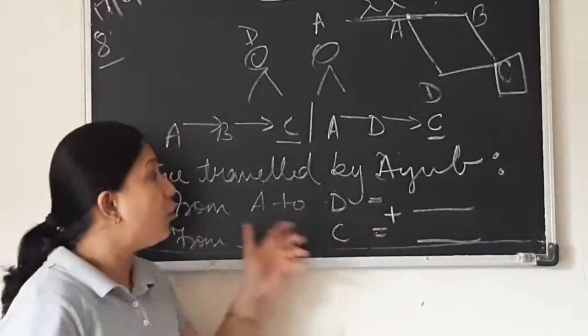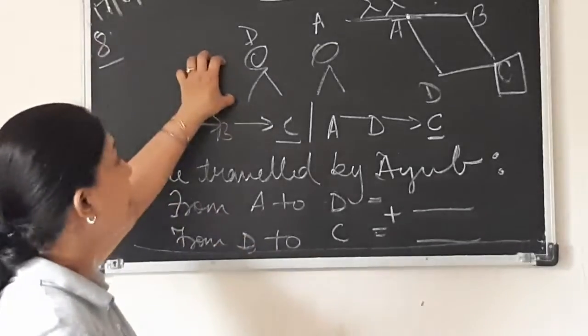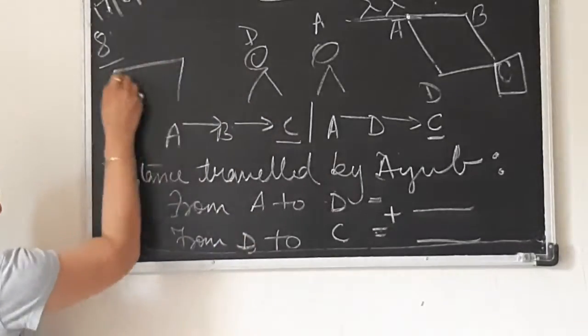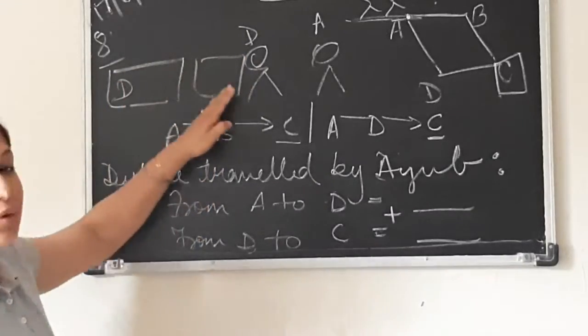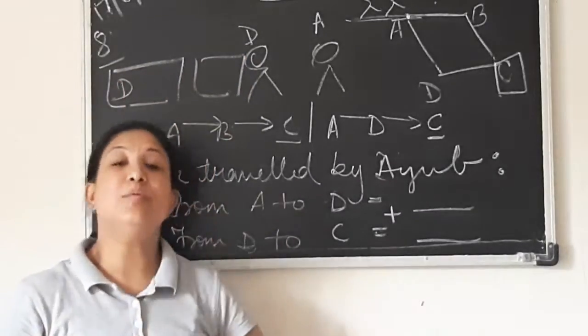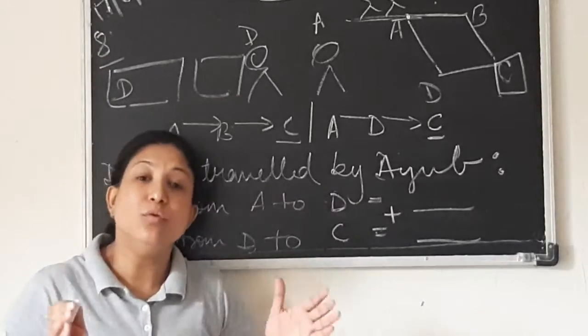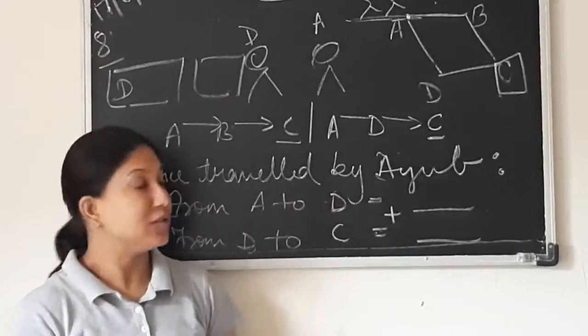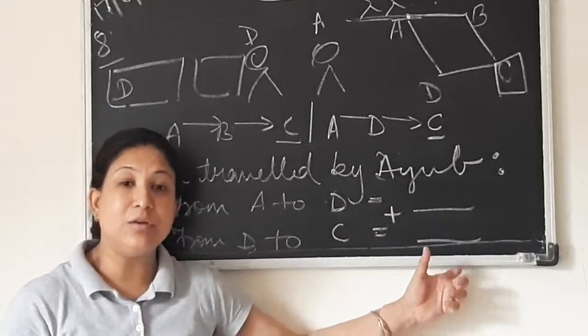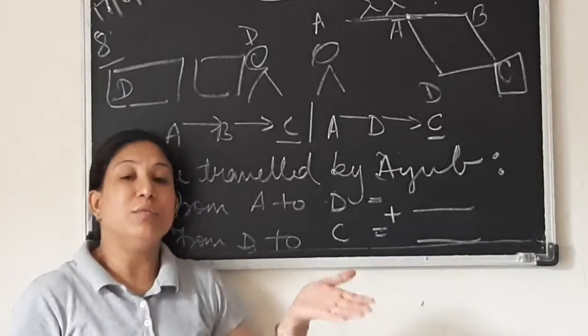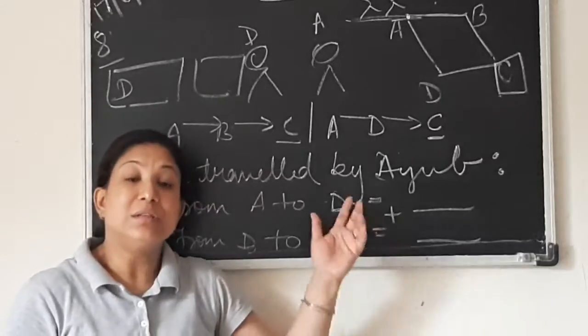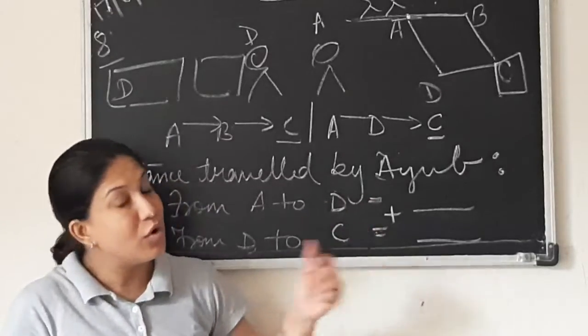So by this, what will happen? We will get the distance covered by Dinesh and by Aiyu. You have to compare because in the book, they are asking you who has travelled more distance. So once you add the values, you now know how to compare it. You will compare whichever value is more. That person has travelled more distance.